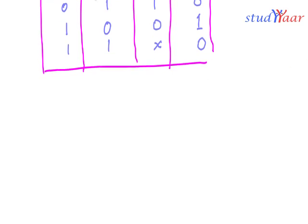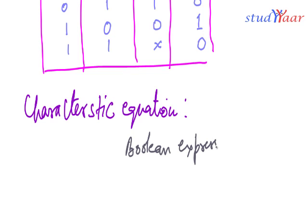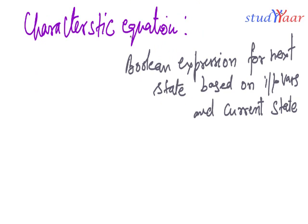Now the next feature of a latch can be given by a characteristic equation. The characteristic equation is a boolean expression for your next state Q(n+1), based on input variables and the current state. For the SR latch, the characteristic equation is Q(n+1) = S + R' · Q(n).